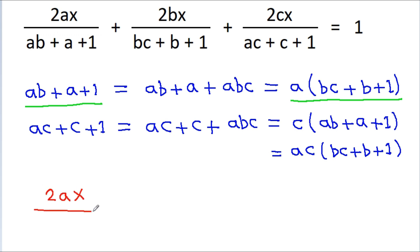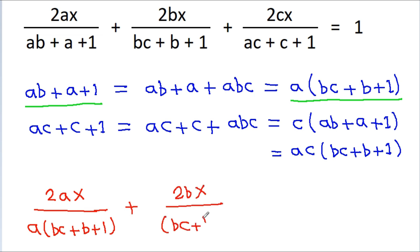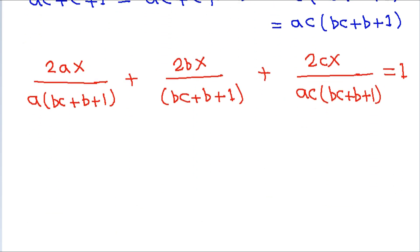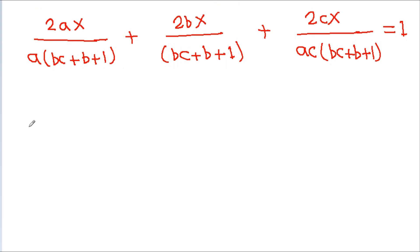So the second equation becomes: 2ax divided by a(bc + b + 1) plus 2bx divided by (bc + b + 1) plus 2cx divided by ac(bc + b + 1) equals 1.